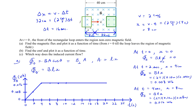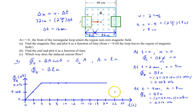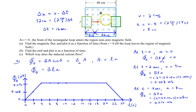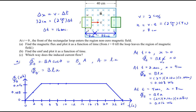Then the loop starts to leave the field, and the flux decreases in the same way it was increasing for the first 4 seconds. At t equals 22 seconds, we have a magnetic flux of 0.008 Webers, and then at 24 seconds we're back to 0. So during the first 4 seconds flux increases linearly, then it's constant while completely enclosed, then as the loop leaves it linearly decreases to 0 at 24 seconds.